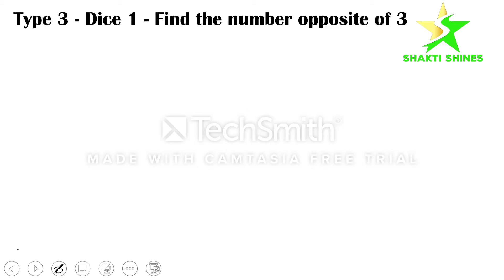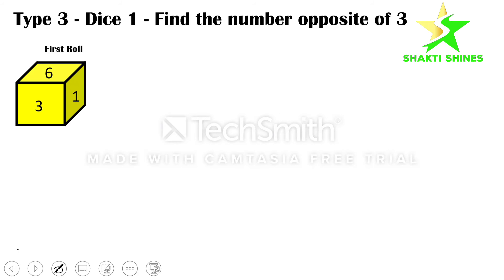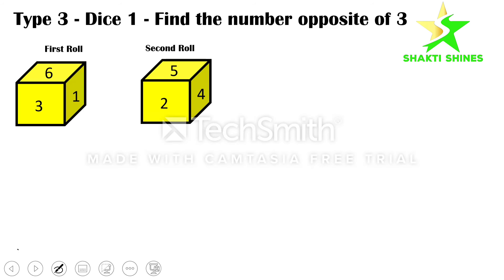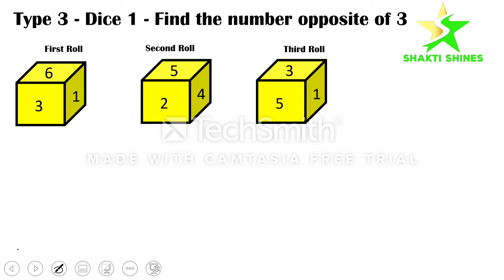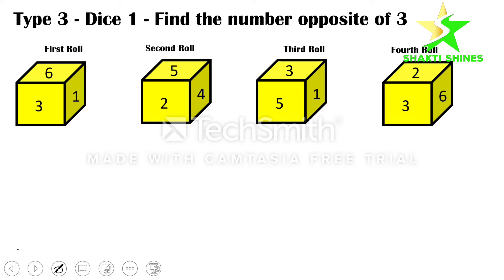Now let's go to the next question. They're asking the opposite of three. Let's check the dice. In the first roll it's three, six, one. In the second roll the numbers are five, two, four. In the third roll the numbers are three, five, one. We even have a fourth roll — the numbers are two, three, six. So let's take the number itself, which is three.